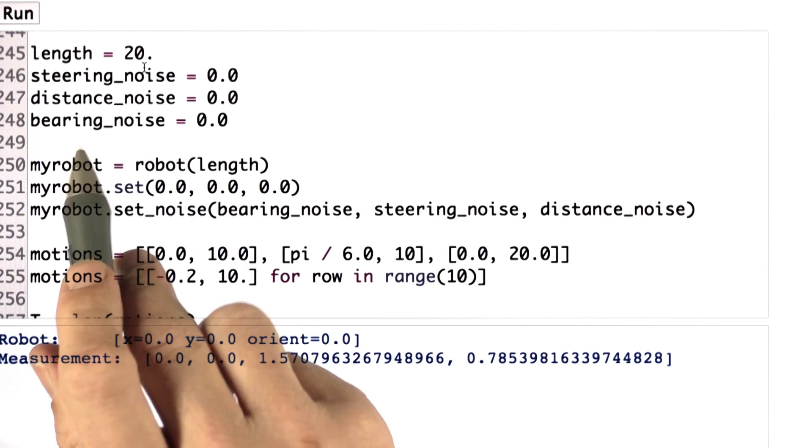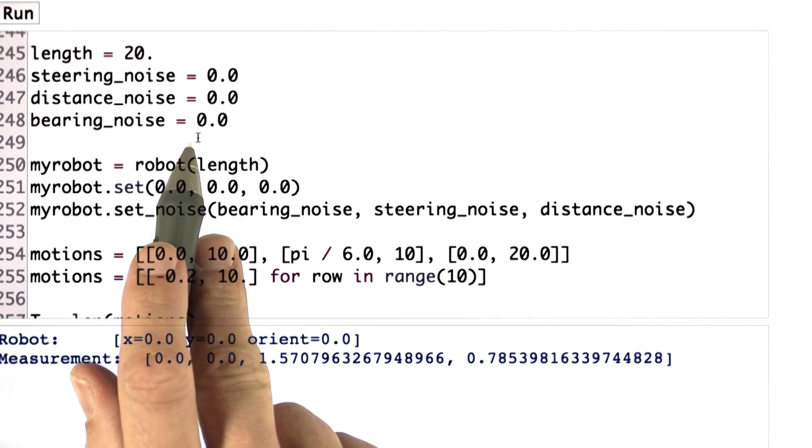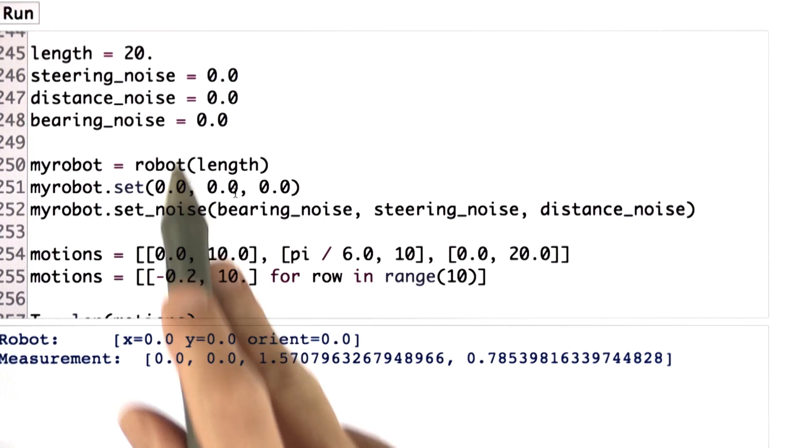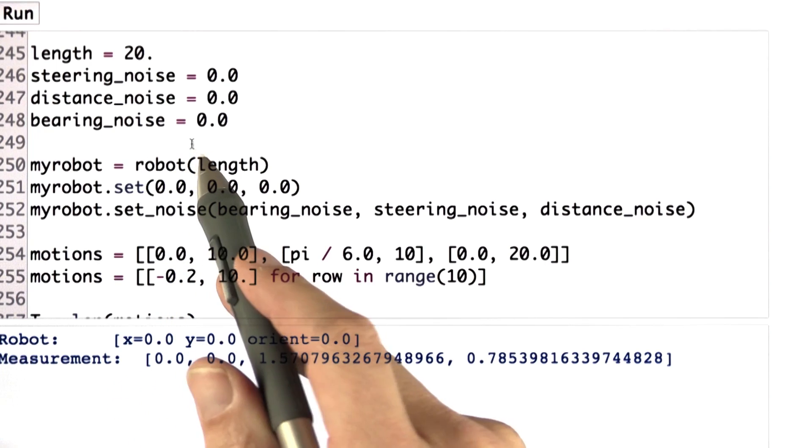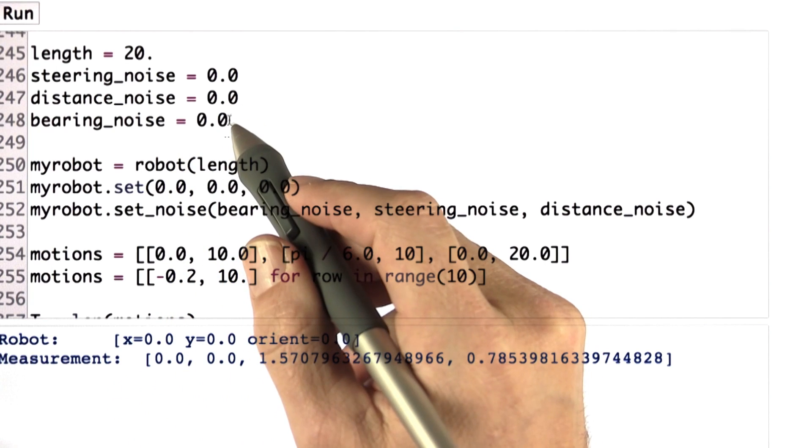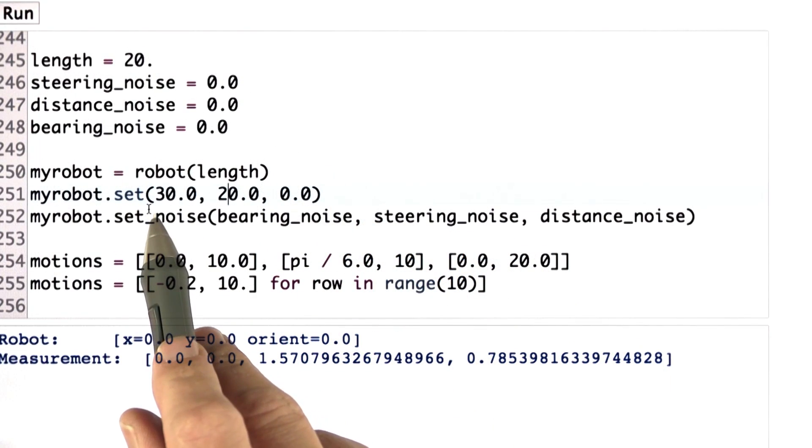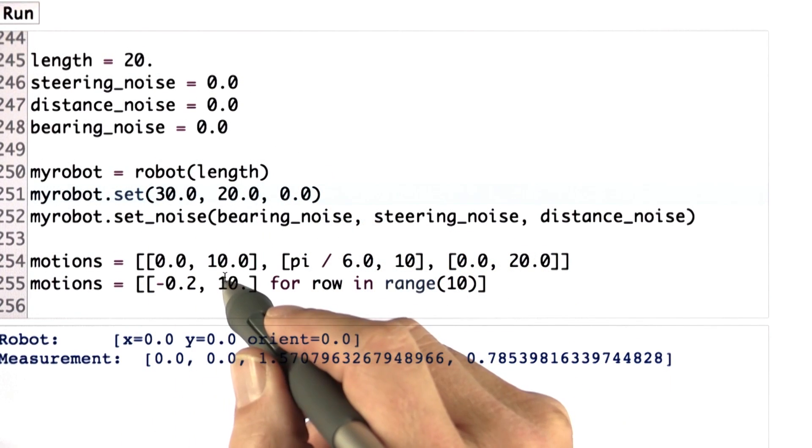So for this implementation, I add a variable called bearingNoise, which you probably already used because it was already referenced before, and I set it to zero just so that we have no noise and you can check your code. We initialize the robot coordinates as 30 and 20. Motions are now irrelevant.